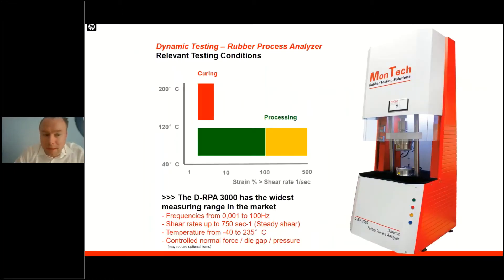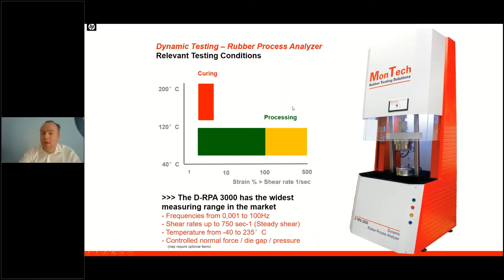Typically, MDR instruments were only used for cure measurement, and RPAs were used to look at low to medium shear processing. Now with our Advanced Applications Package, new processing techniques can be successfully simulated in the RPA. Combined with our low temperature MCOOL-40 system, even lower test temperatures down to minus 40 degrees C are possible.